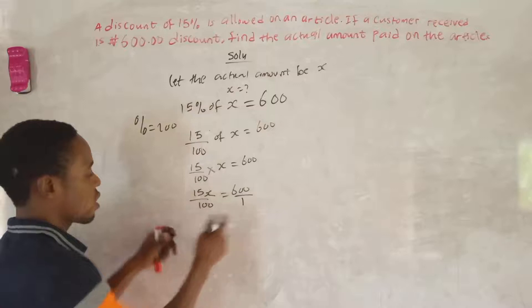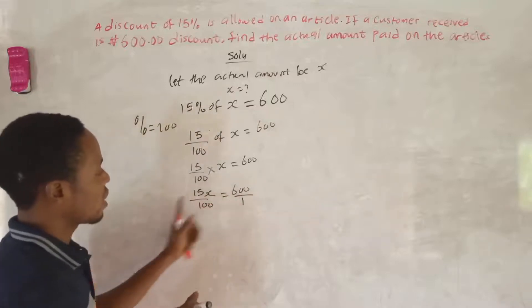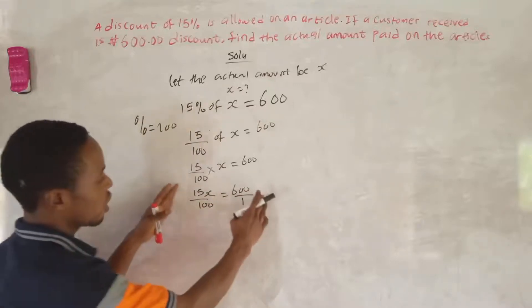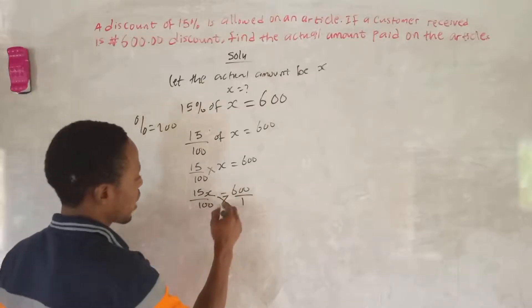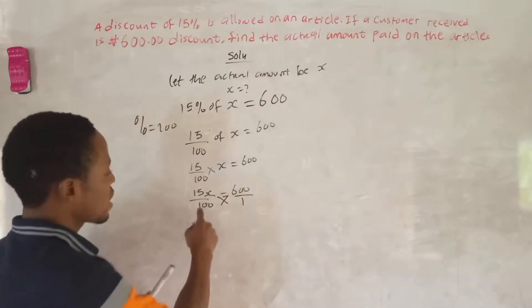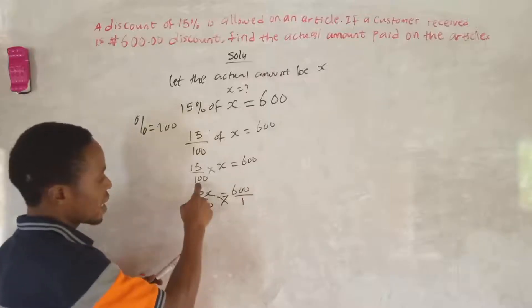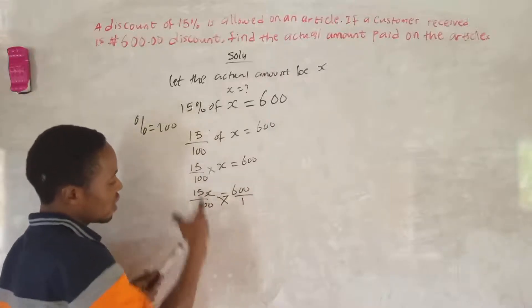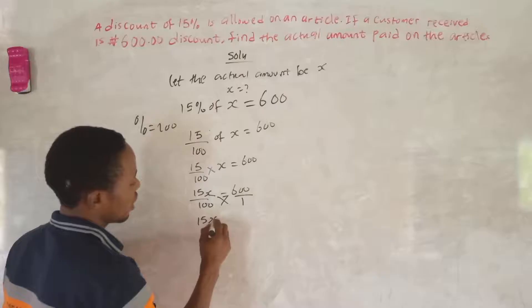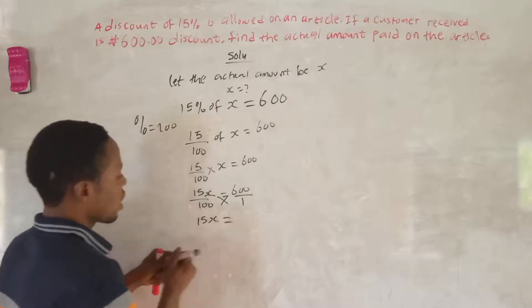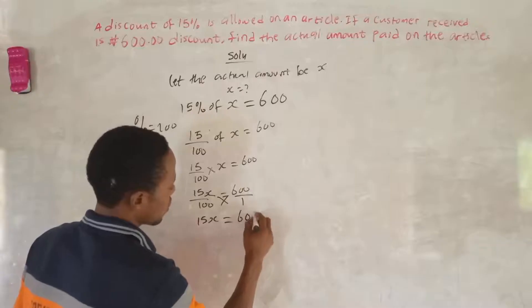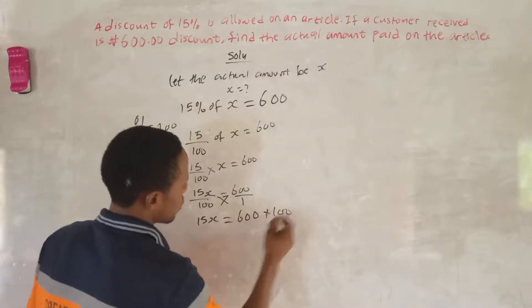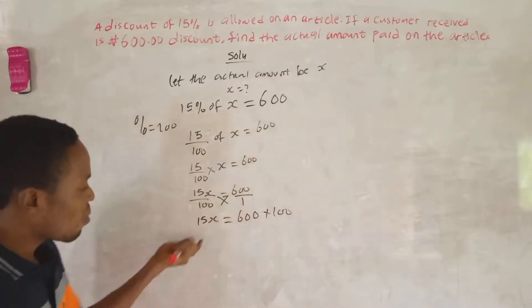This one is not in fraction form, so to make this one a fraction, you add 1 under it. So when these are both fractions, you cross multiply. So 1 times 15S gives us 15S is equal to 100 times 600, which is 60,000.